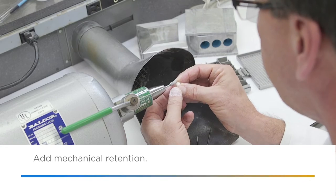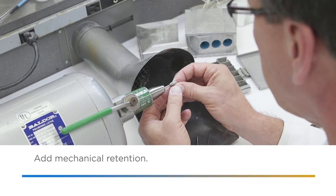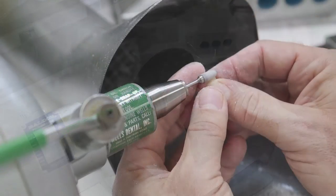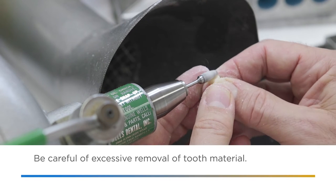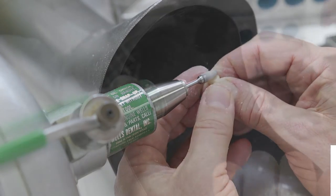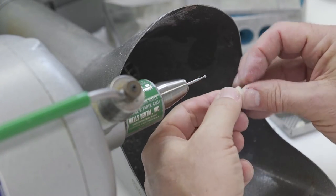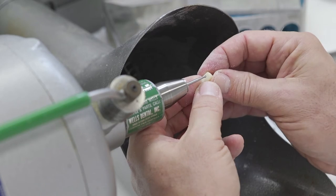Add mechanical retention to the teeth. Remove only enough tooth material to enhance retention. Using a number 4 round burr, cut diatorics in teeth as shown. Excessive removal of tooth material will weaken the tooth and may lead to fracture.